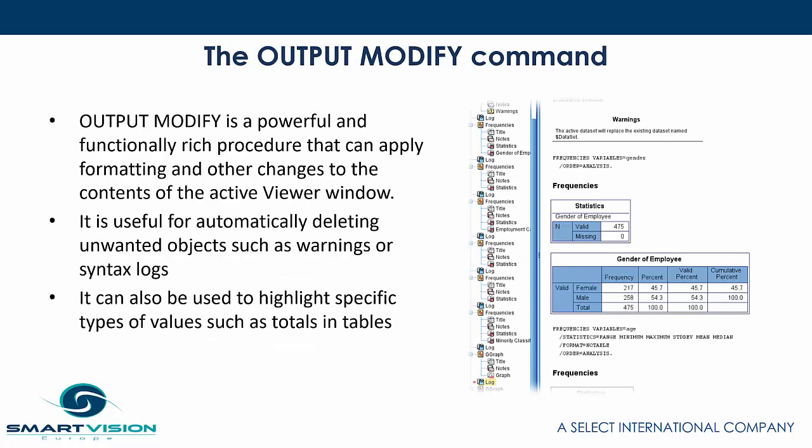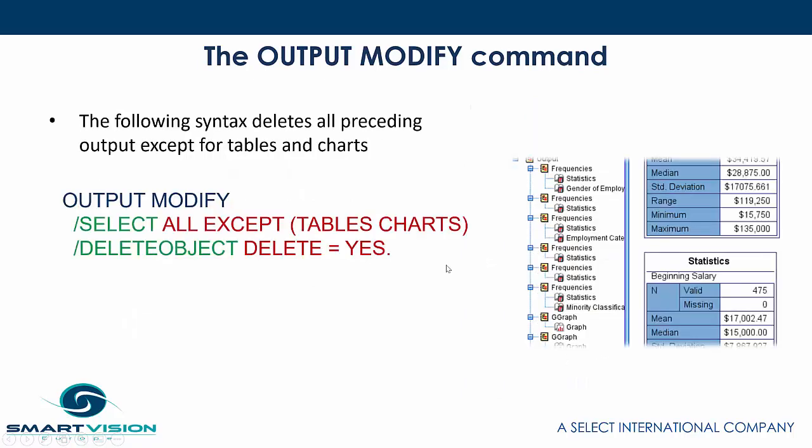Lastly, we've got output modify. Output modify is quite a powerful command in that it allows us to change what we're seeing in the output window. It's very good when we want to clean up the viewer window and get rid of stuff we don't want to include in a report. It'll automatically delete objects like warnings or syntax logs, but it can also be used to highlight specific values such as totals in a table.